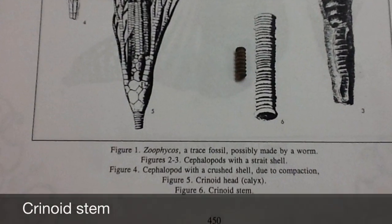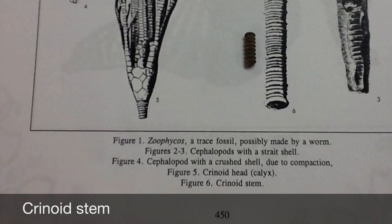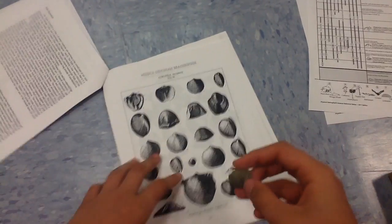By doing this, we identify this fossil as a crinoid stem. Using the same method, identify your second fossil.